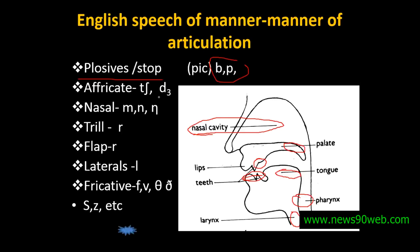Affricates — cha, ja. Affricates means if the stop is not held for any appreciable time and released slowly. Such as ch and j — at the tongue ridge, these are affricates.